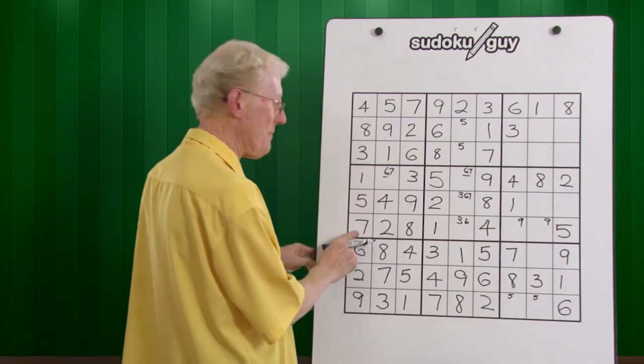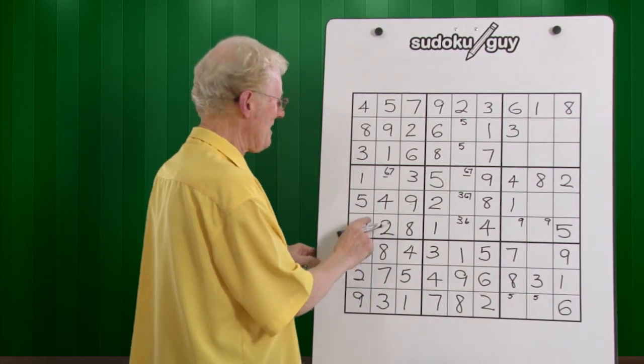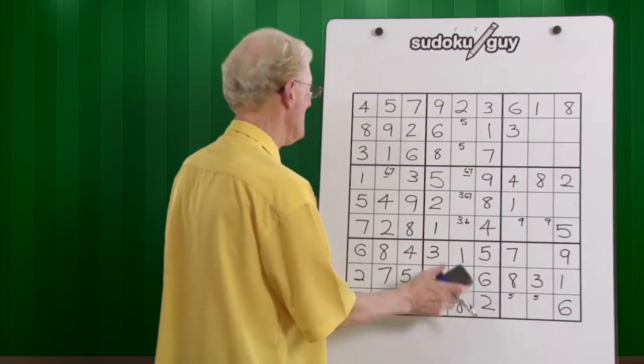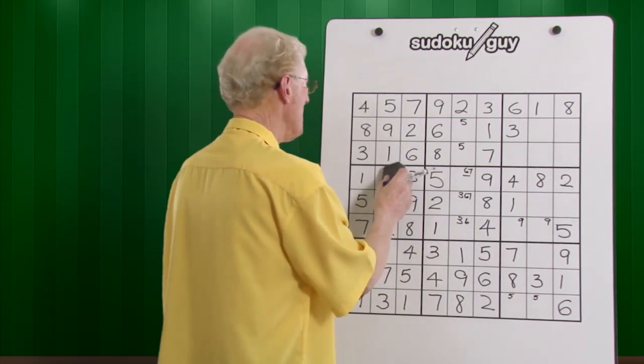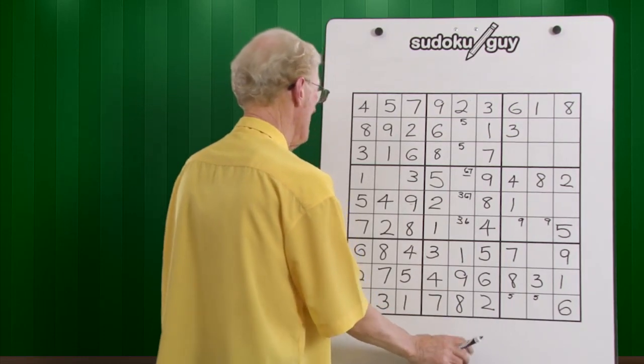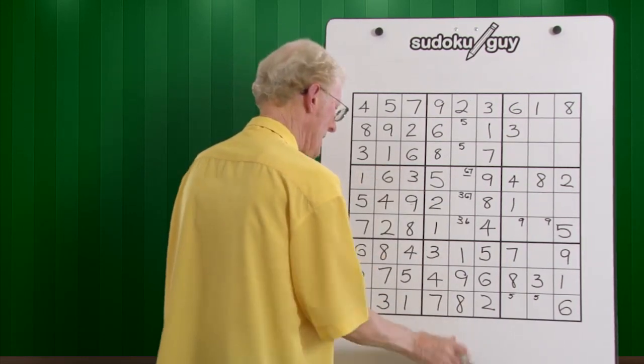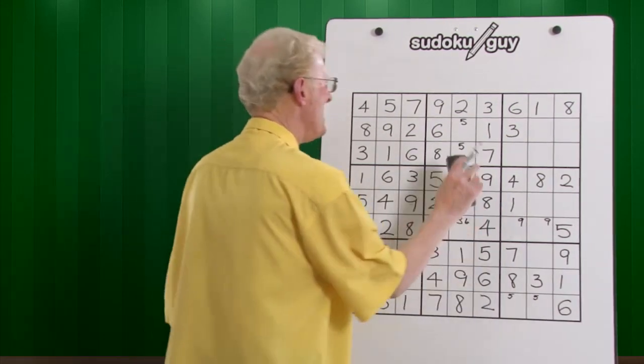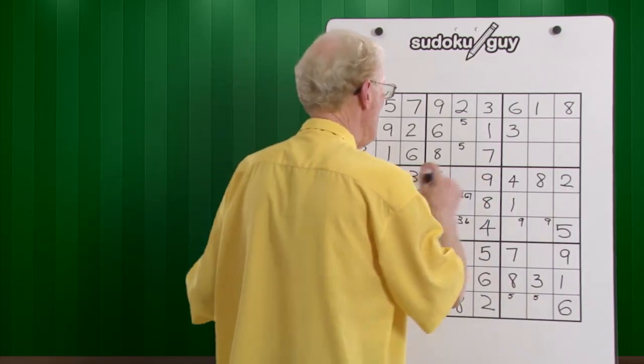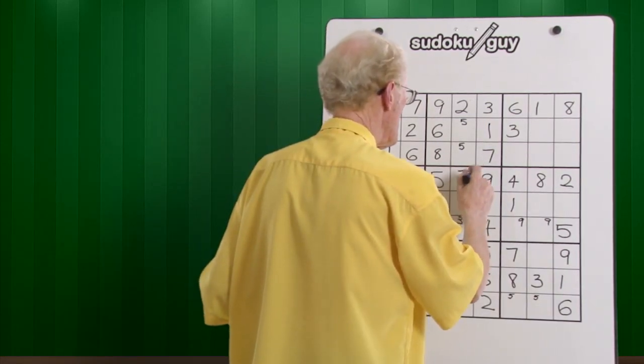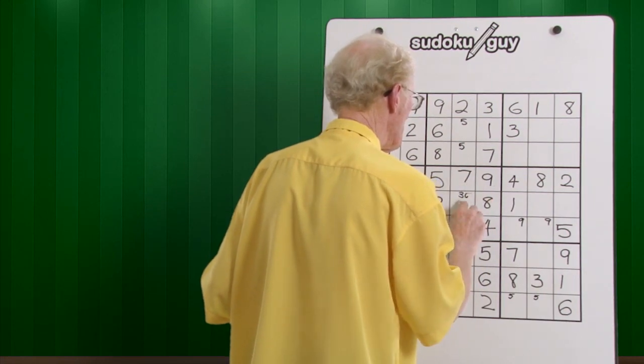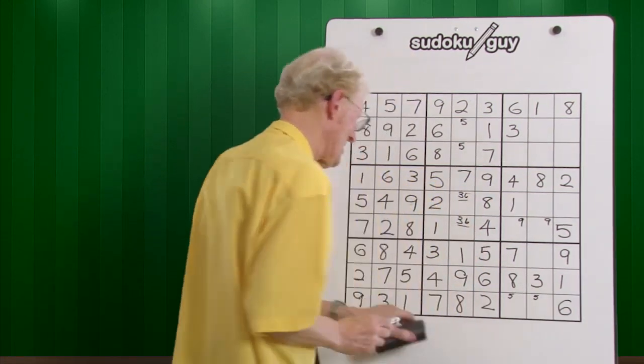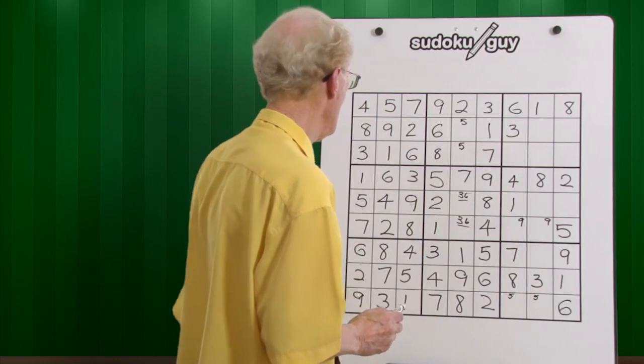But did you realize we have a seven here already? That means that this has to be a six. I didn't see that before. So that becomes a six. If that becomes a six, this becomes a seven. And therefore, you can cancel out this seven and we finish up with a matching three, six, three, six matching pair. That's going to be helpful later on.